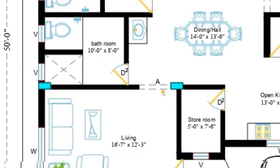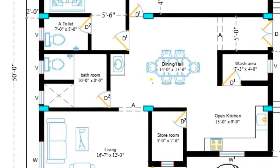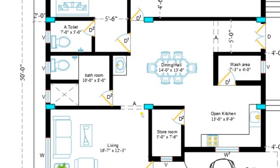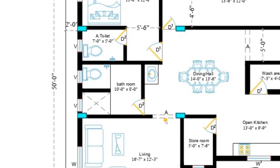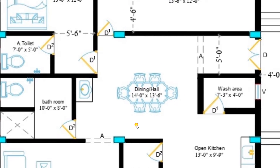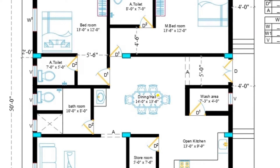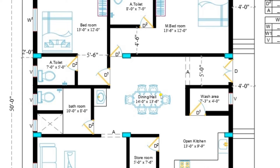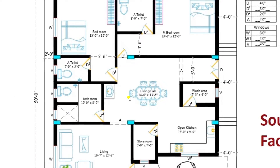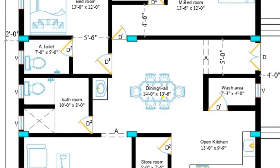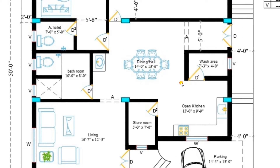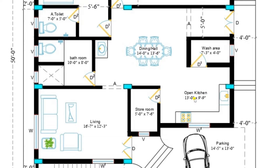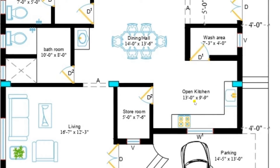From this hall, I am entering into the dining hall. There is an arch provided of size 4 feet. This is a very lavish dining hall where all family members can dine at the same time. It is of size 14 feet by 13 feet 6 inches. On the right side, there is an open kitchen of size 13 feet by 9 feet.